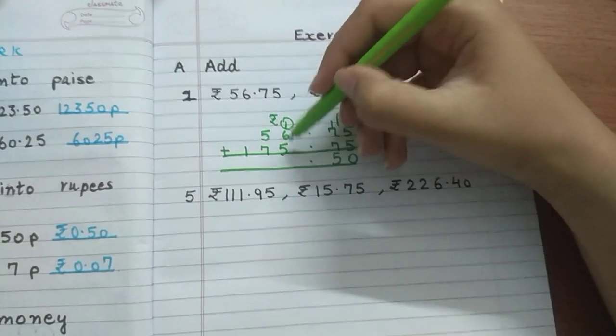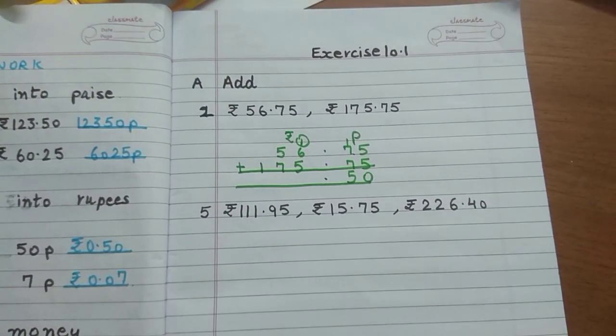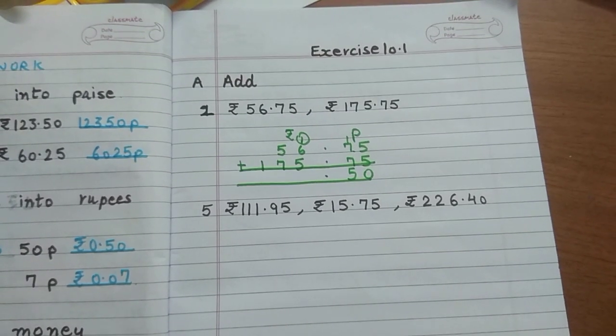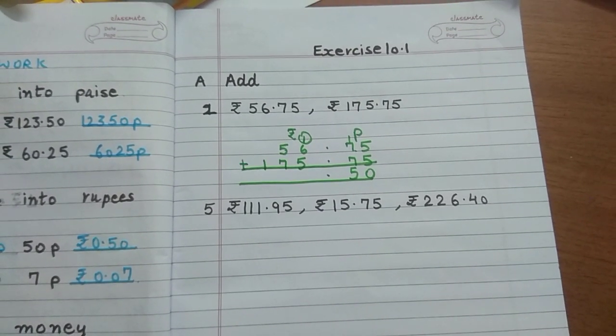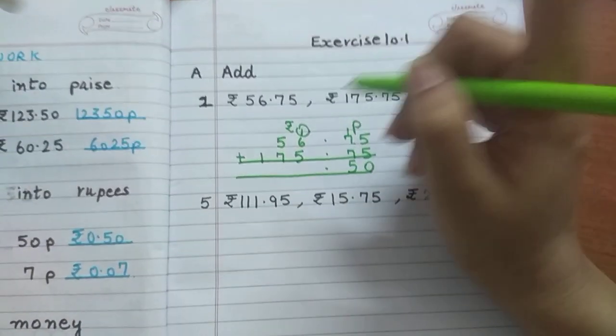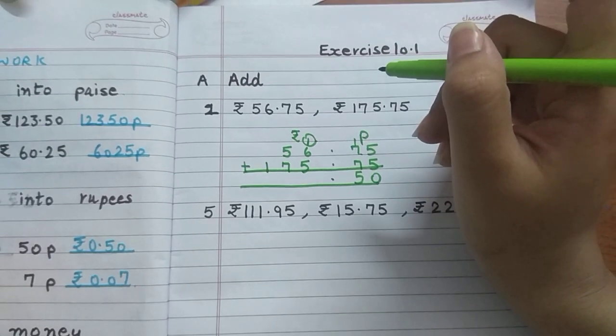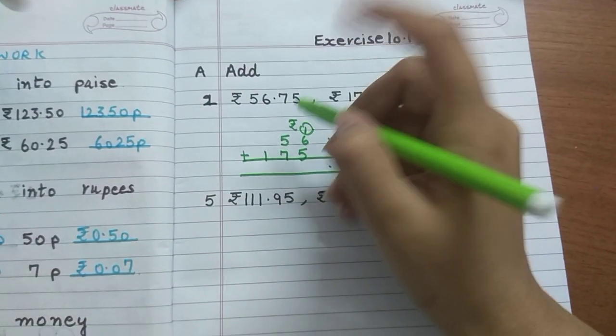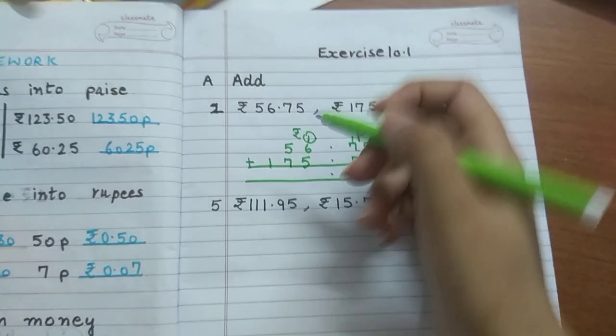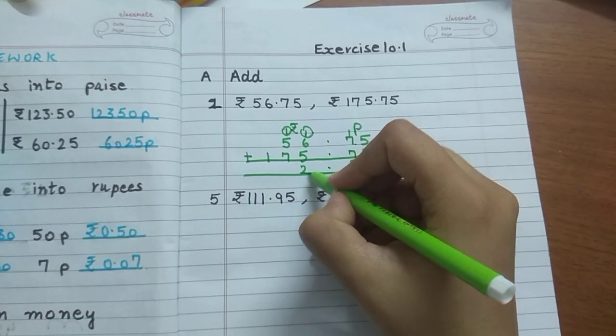Now again 6 plus 5. 6 in the mind, open 5 fingers, count after 6: 7, 8, 9, 10, 11. 11 plus 1 carry over is 12. So 1 up, 2 down.